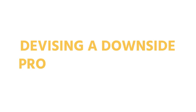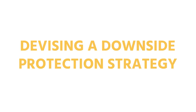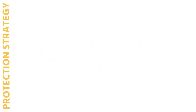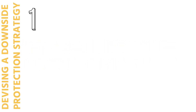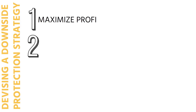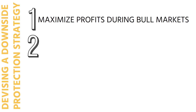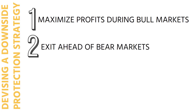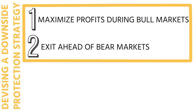Devising a downside protection strategy. The objectives of a successful strategy are twofold: first, maximize profits during bull markets; second, exit ahead of bear markets. The strategies we present achieve both objectives.